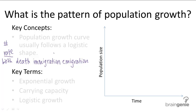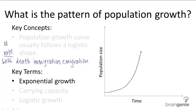The simplest model for population growth looks something like this: you start somewhere down here and first have a slow rate of growth, but you get faster and faster. In this model, a population grows at an increasing rate with no limitations. This is called exponential growth.